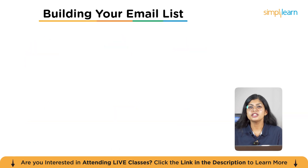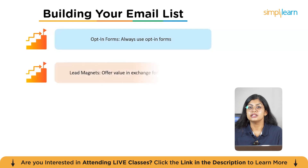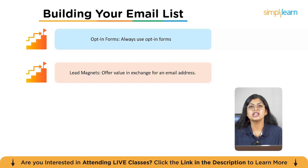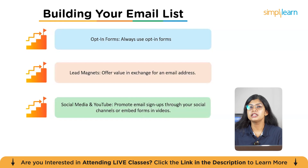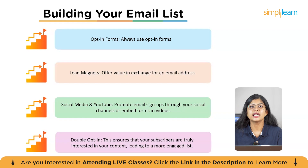When building your email list, you cannot just buy lists — quality matters. Here's how to grow your list ethically. First, use opt-in forms — never purchase lists. Second, lead magnets — offer valuable content such as eBooks, discounts, or free webinars in exchange for an email address. Third, social media and YouTube — promote email sign-ups through your channels or embed forms in videos. Fourth, double opt-in — this ensures subscribers are truly interested, leading to a more engaged list. Pro tip: always provide a clear unsubscribe option and comply with laws like GDPR and CAN-SPAM.